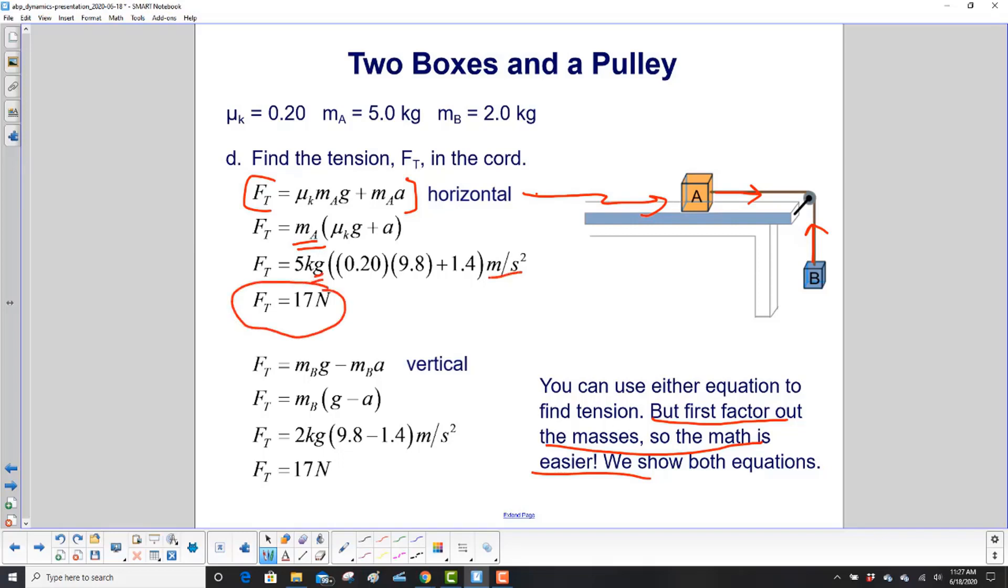We have kilograms meters per second squared. That's a newton. Then we do the vertical equation and we get this equation. Once again, we factor out the mass. So it looks like this would be the easier one to use because we don't have to worry about the coefficient of friction. And as hopefully expected, we get the same tension force.